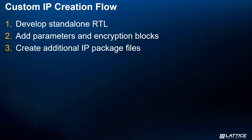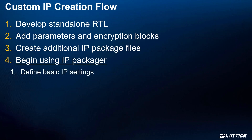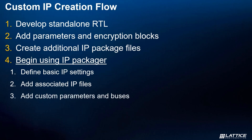Once the first half of your IP development is done, it's time to move on to the second half — actually creating the IP package in IP Packager. Within IP Packager, the first thing you need to do is define the basic IP settings like the supported devices, IP name, RTL, top-level ports, and all other mandatory settings. Once your basic IP settings are configured, add the additional associated IP files. Then, begin customizing your IP by adding custom parameters and bus interfaces. Finally, once all settings are defined, the last part of the custom IP creation flow is to package the IP for use in Radiant or Propel.